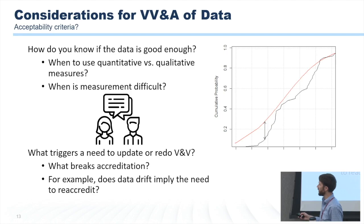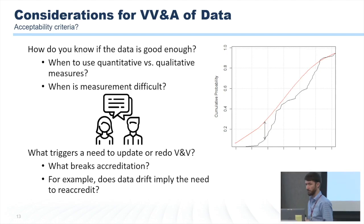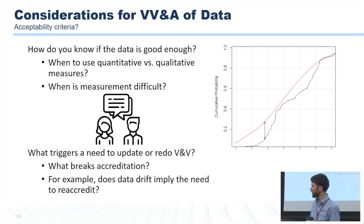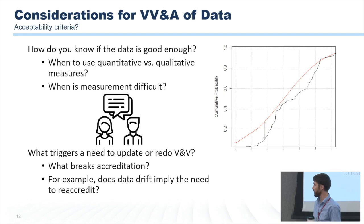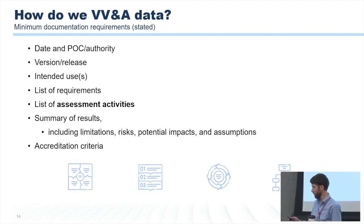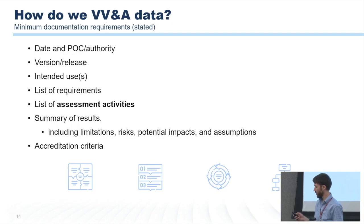Acceptability criteria — this is sort of just general for any sort of VV&A. But I mentioned earlier that we may need to worry about breaking accreditation. For example: does data drift imply the need to reaccredit? Can data drift break accreditation? Maybe. Maybe it depends — maybe it's a situation where you just need to collect updated data and retrain your model, or maybe it's a situation where your data provider has changed the type of data they're collecting or changed the way they're collecting the data. There may be situations in which you need to worry about your accreditation being broken from a formal standpoint. I still think that the general spirit of VV&A is a good idea.